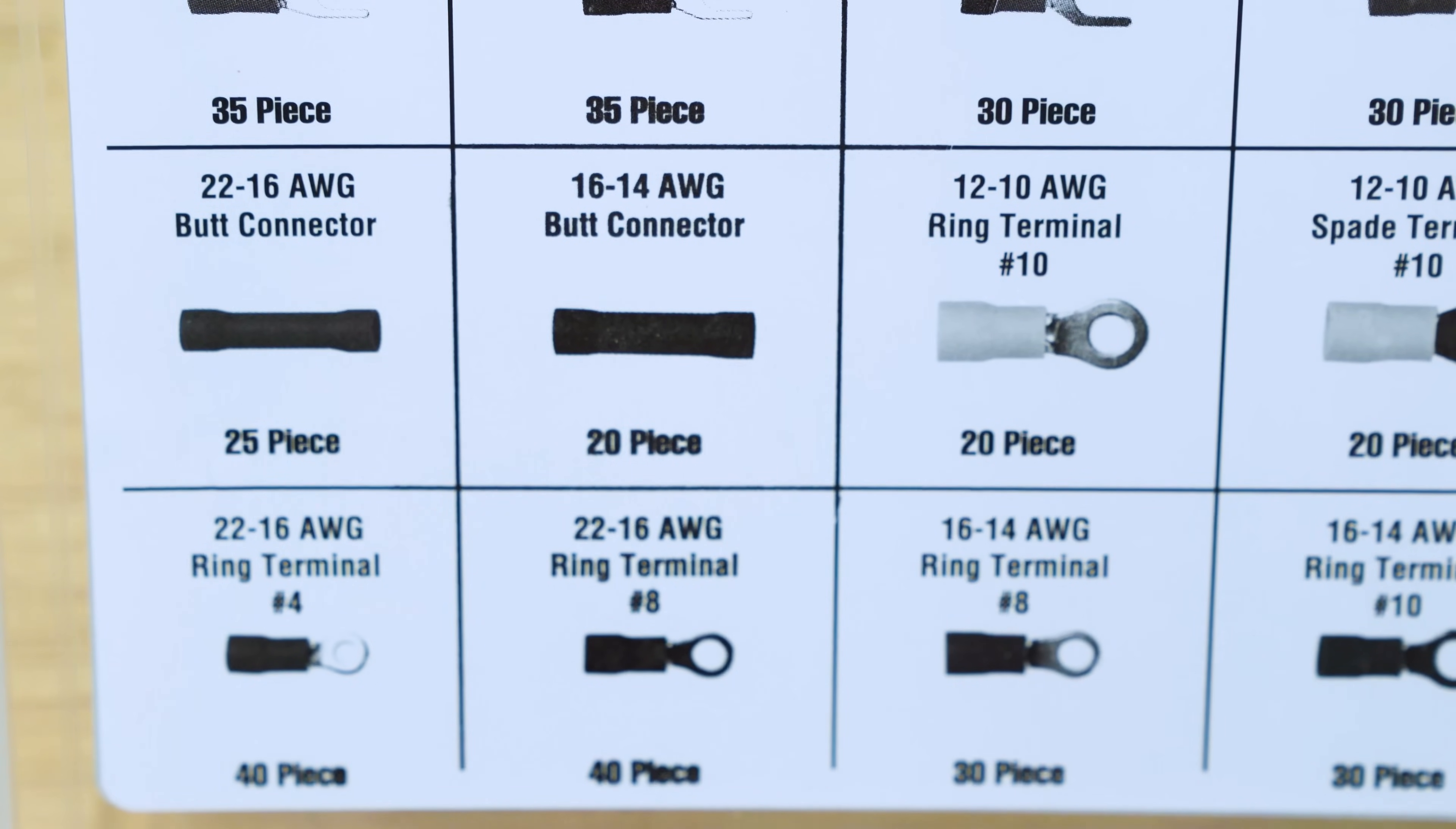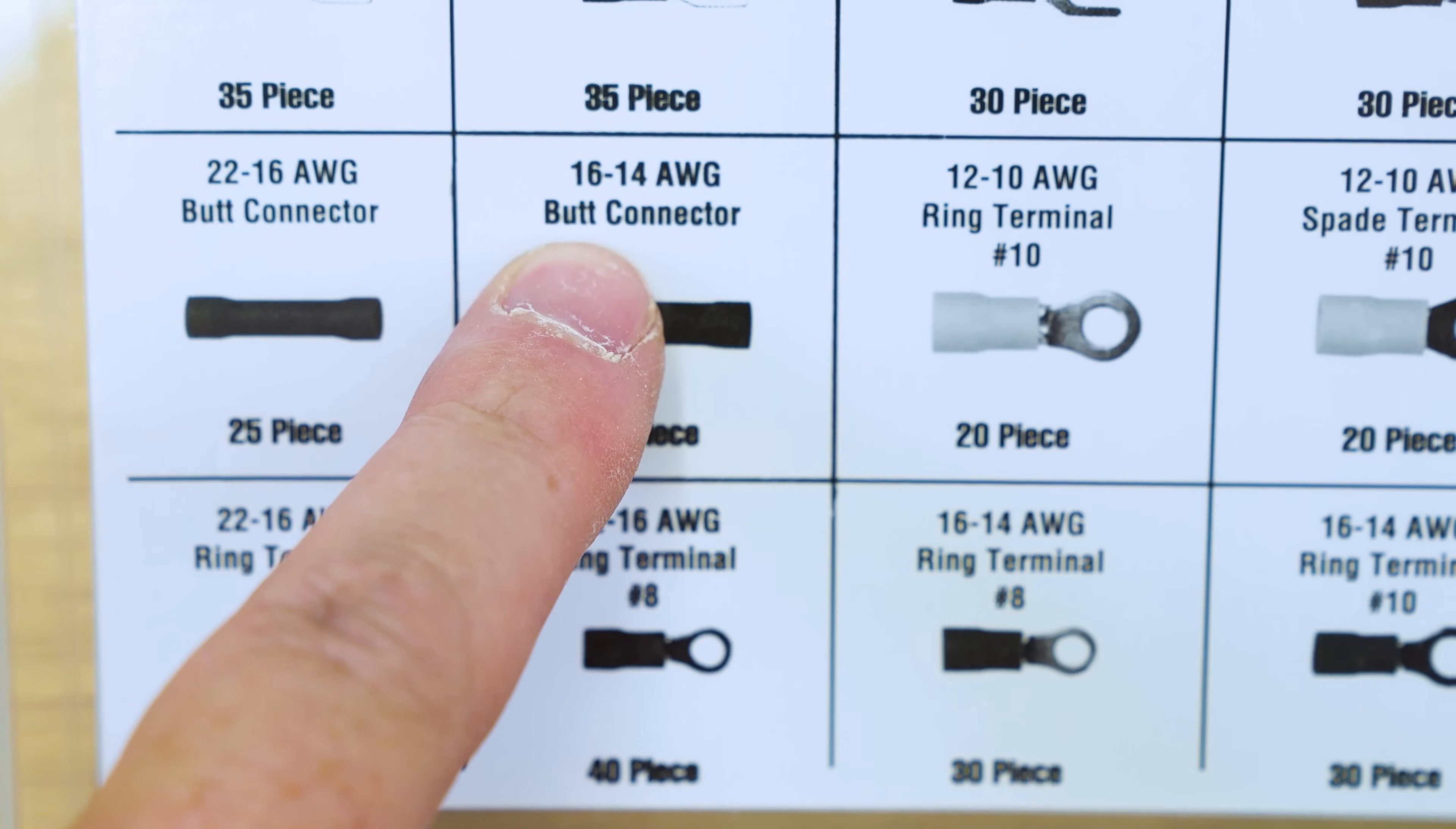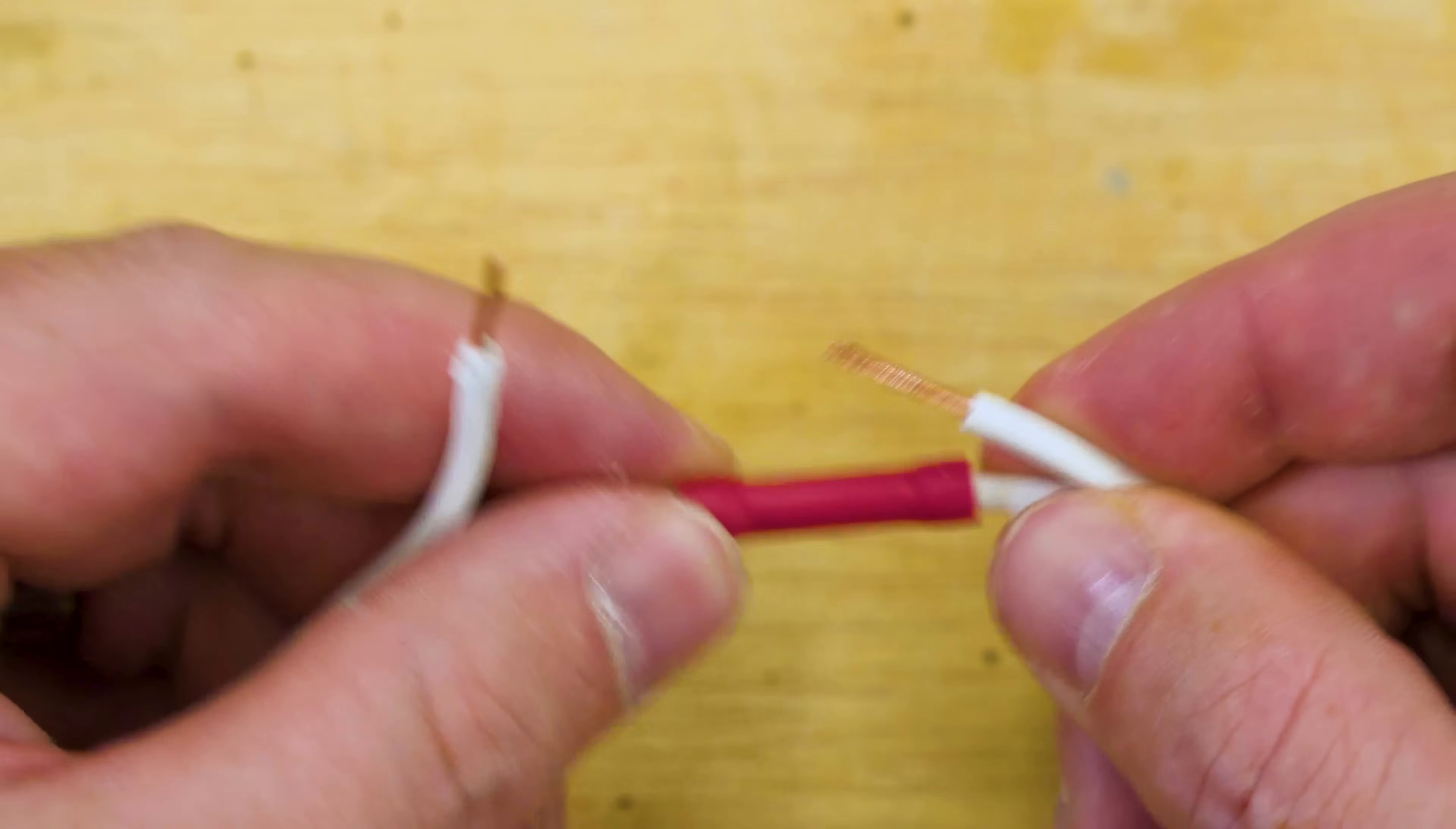Now, this can be really effective, but it's key that you use the right size butt joint and the right gauge for the gauge of wires that you're doing. If you use one that's too small or too big, it's just not going to work and it's not going to hold. Even if it holds temporarily, it's much more likely to break away later on.